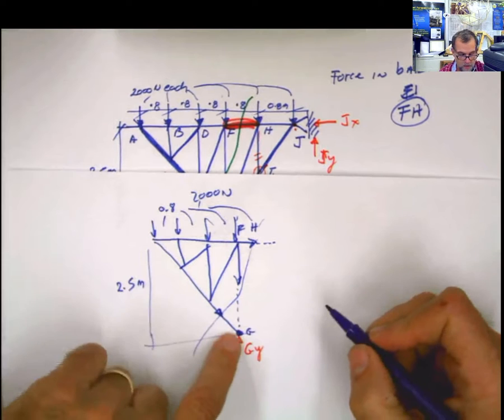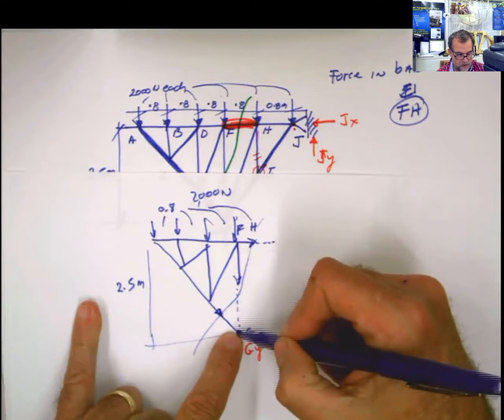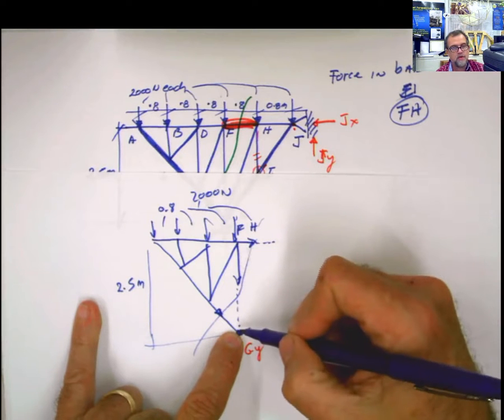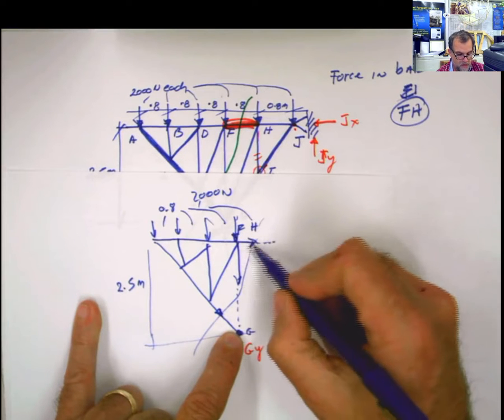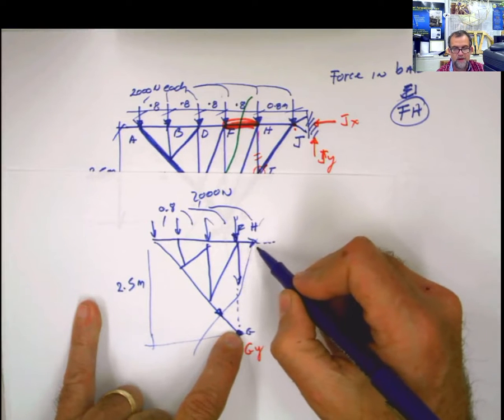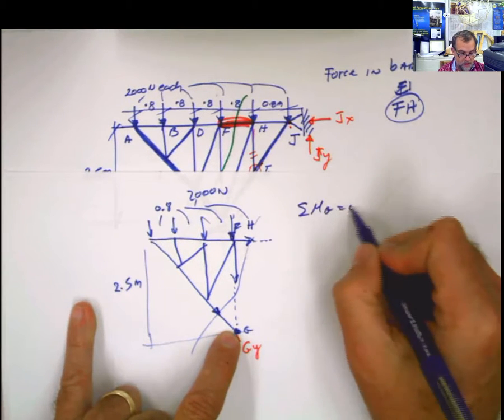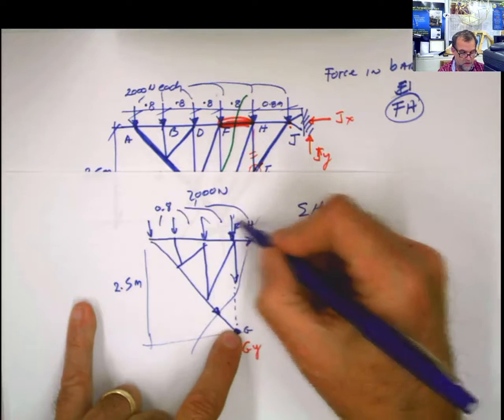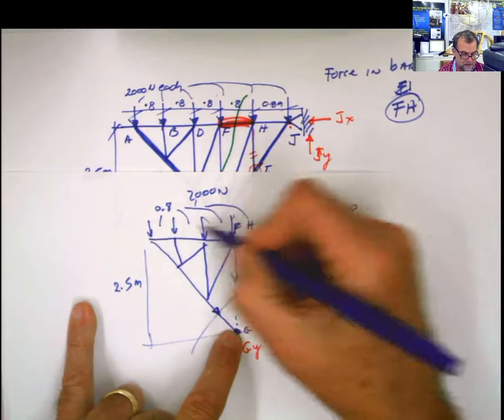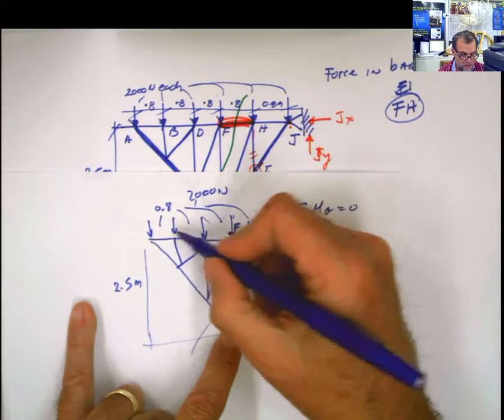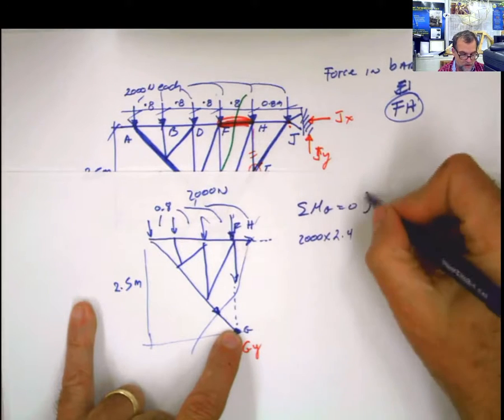If I do moment with respect to the point G, look what is happening. This force passes through the point, so it doesn't produce moment. This force passes through the point, so it's not producing moment. This external force also passes through the moment, and my only unknown is the bar FH. So what do I do? Summation of moments with respect to G equals 0. And then I start doing this. Remember, each one of these forces is 2,000. So I have 2,000 times the distance from here to here, which is 0.8, 0.8, 0.8 - 2.4.